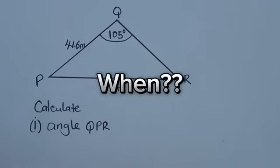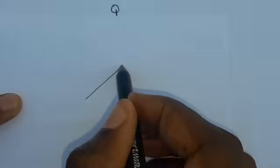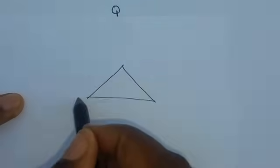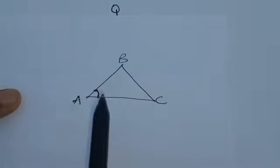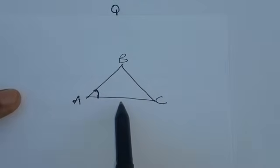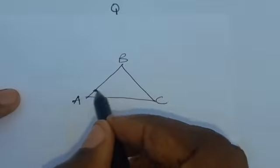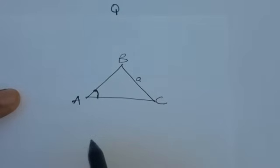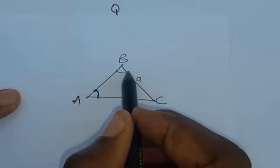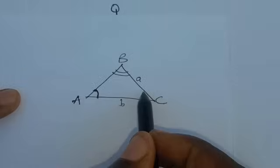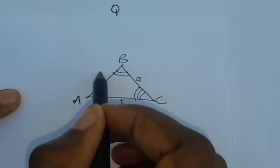So when do you use the cosine rule? Here are the conditions. For example, if you have a triangle that is not a right angle triangle — let's say triangle ABC — the first thing you have to do is label the sides. Angle A means the side opposite to it is written with small letter a, angle B gives small letter b, and angle C gives small letter c.